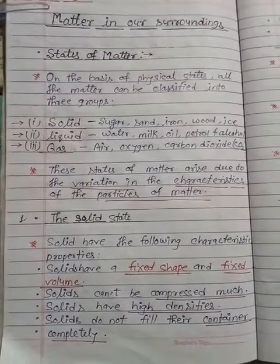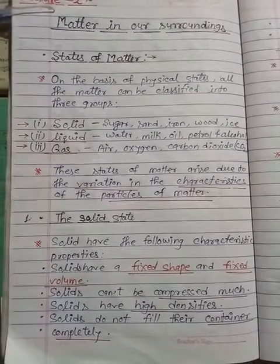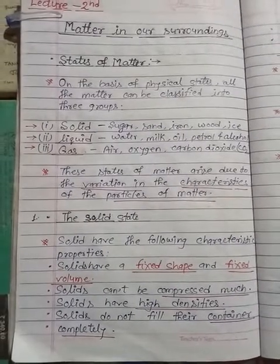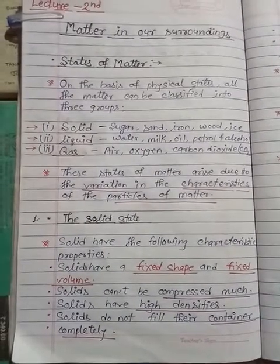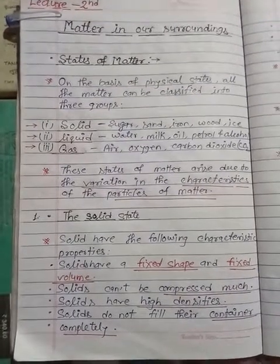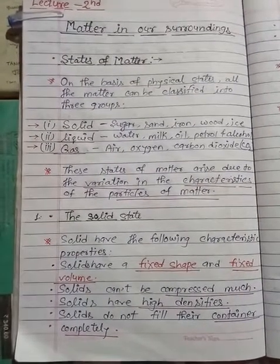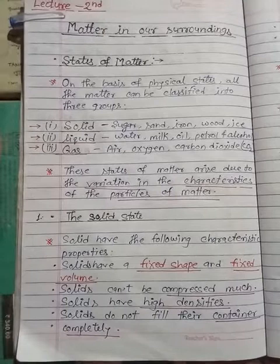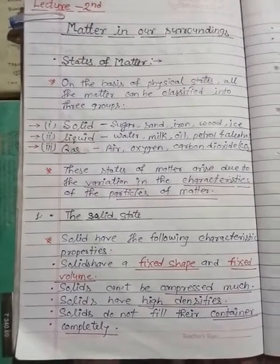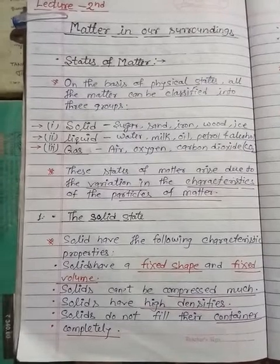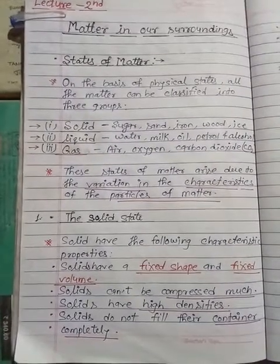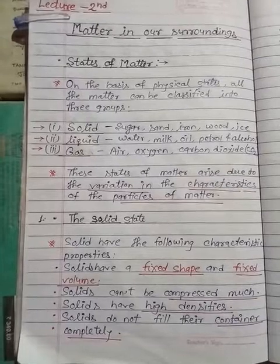First of all, we are going to discuss the solid state. Solids have the following characteristic properties: solids have a fixed shape and fixed volume. As you have seen, the shape of a pen is always the same today or after one or two years — that size, shape, and volume is fixed.